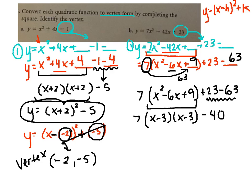It simplifies. And then the last step is to write this as that perfect binomial. So 7 times x minus 3 quantity squared minus 40.